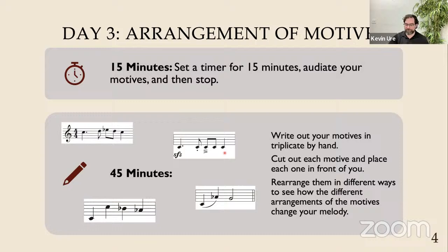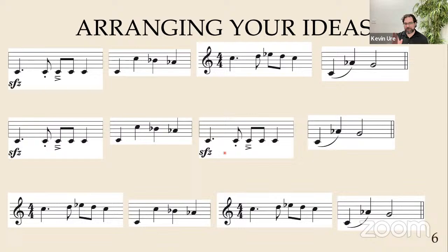It's not that if you don't follow this process perfectly it won't work — it's simply restricting yourself, preventing yourself from doing anything other than what you wrote on days one and two. Day four is when you get your free composition. For ten minutes, you have your motives laid out in front of you. You want to audiate each motive, and then audiate each sequence that you created on day three and choose two or three. If you did four options, only choose three; if you did three permutations, only do two. Choose a couple that work really well together.